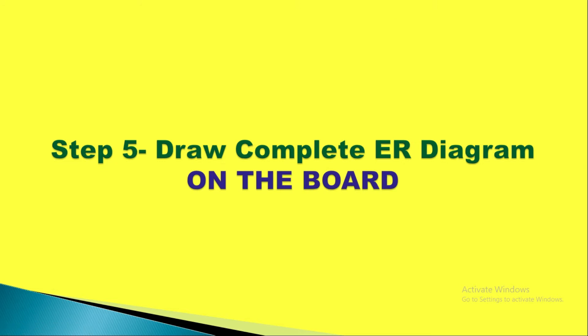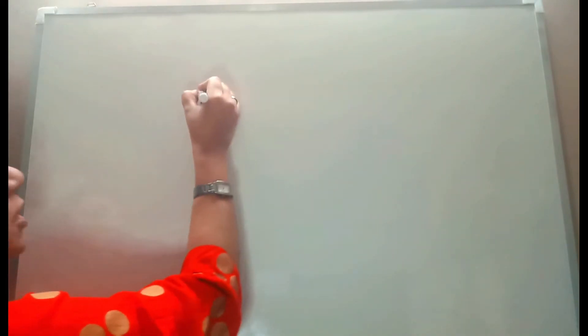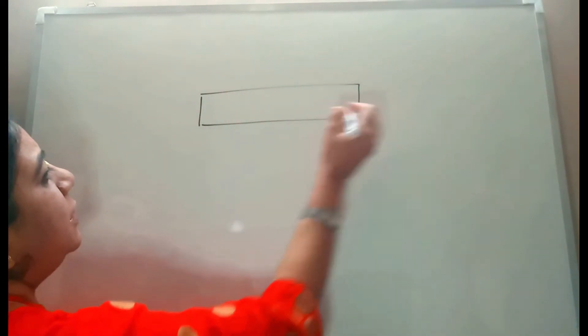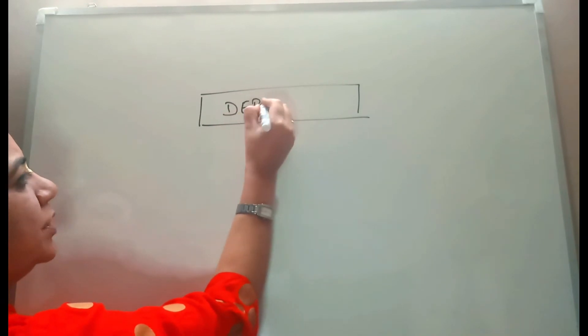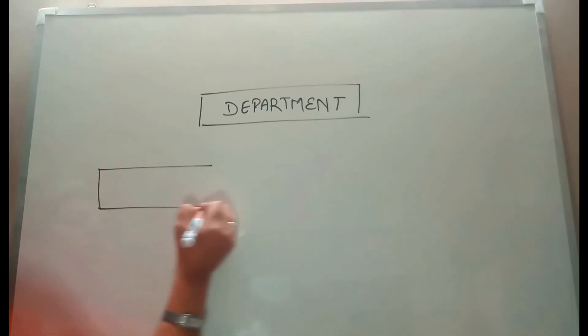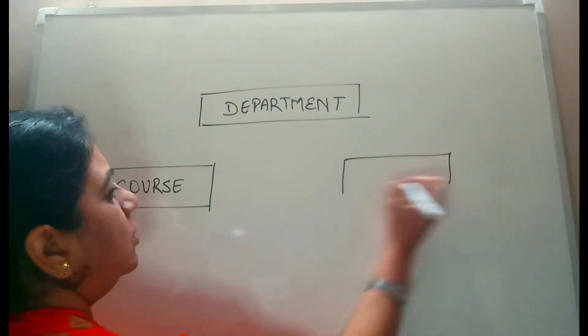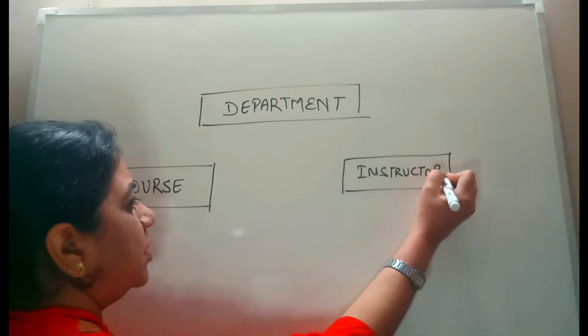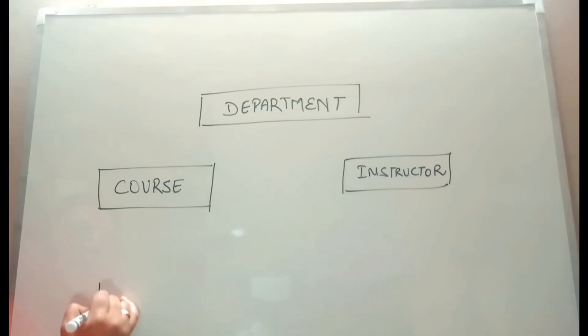The final step is how to draw the complete ER diagram of the college management system, which we will now see on the board. Let's start with the designing of the ER diagram. We have found four entities. Let's draw those four entities and their attributes. The four entities are: department, course, instructor, and student.